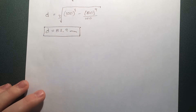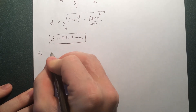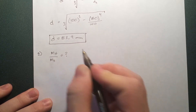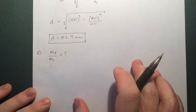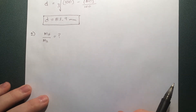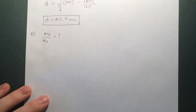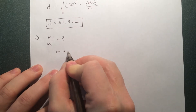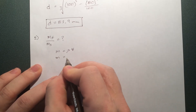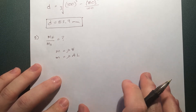We need to find the ratio of the masses, but we're not given any mass information. A rule of thumb: if you're not given a variable, it's going to cancel out somewhere. So let's express these masses in terms of variables that will cancel when we divide. Mass in general is density times volume, and for a bar, mass equals density times cross-sectional area times length.